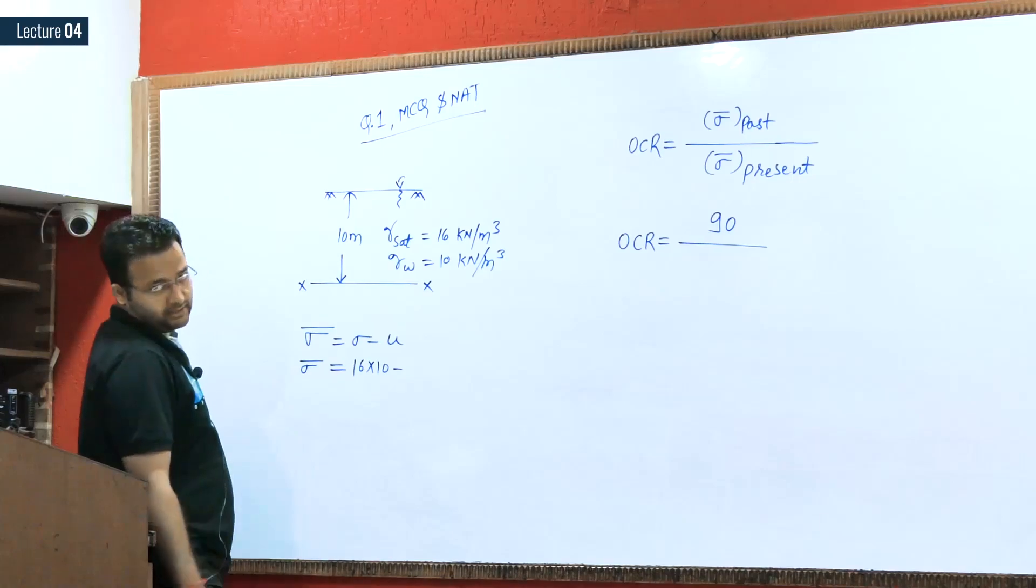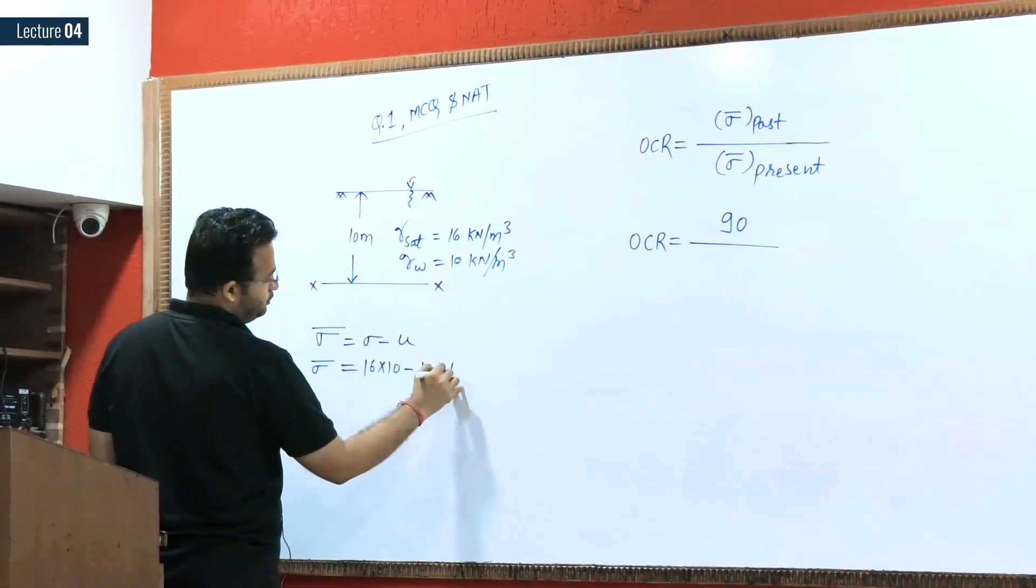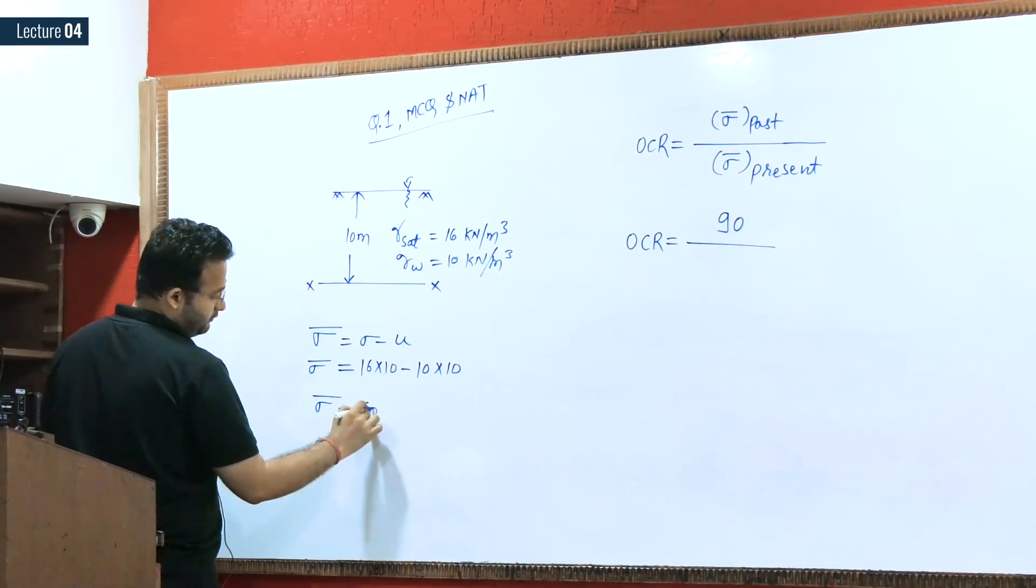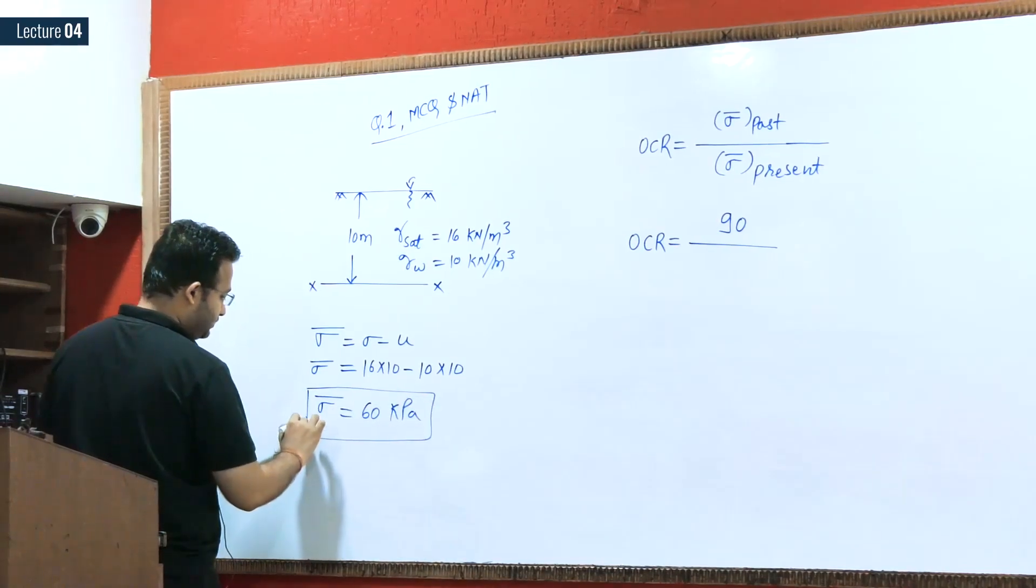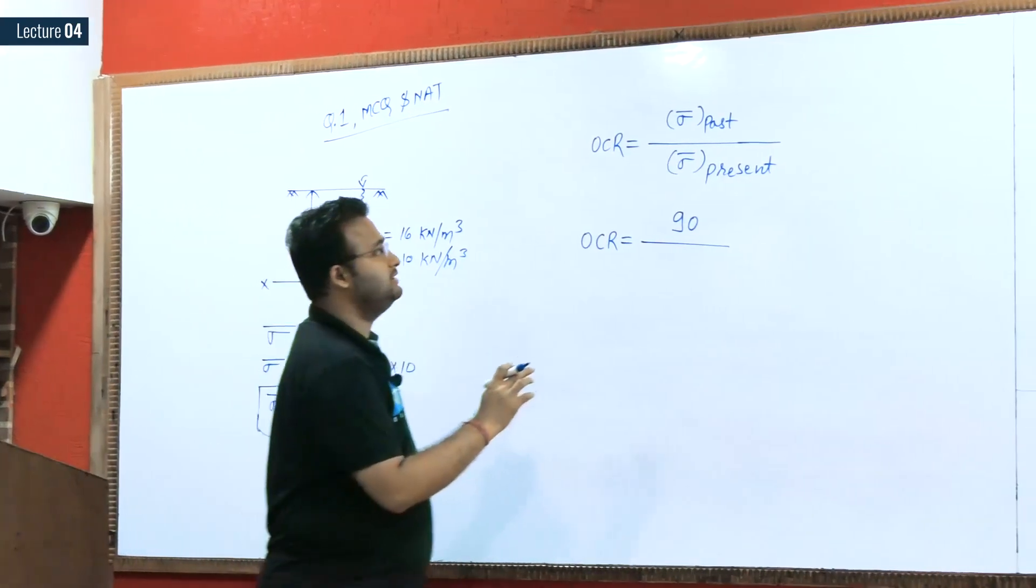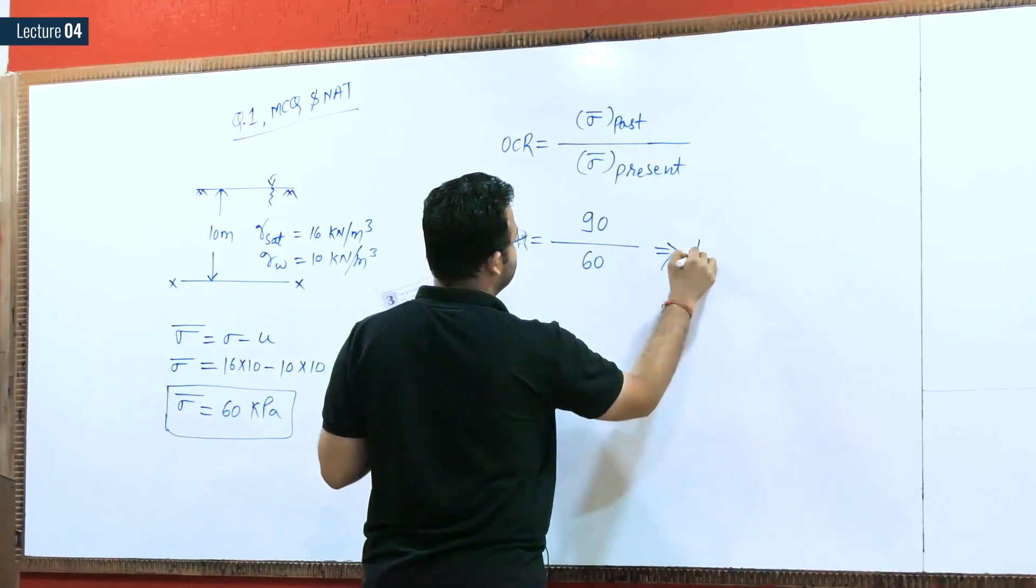For water pressure, gamma w they have mentioned as 10 kN/m³. Suppose if they do not give the value of gamma w, then we should take 9.81. So 10 times 10. So sigma bar we have 160 minus 100, of course 60 kPa.